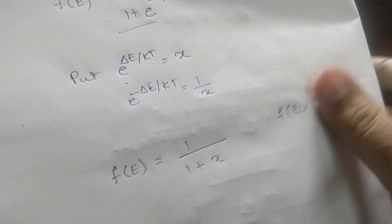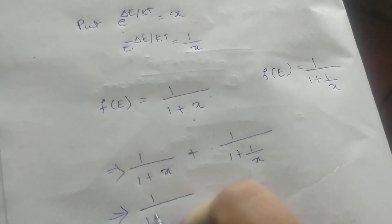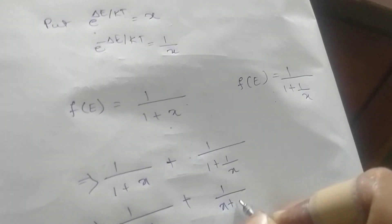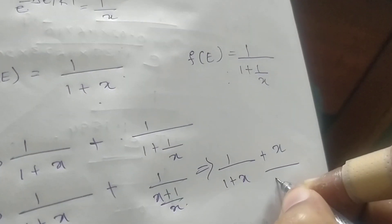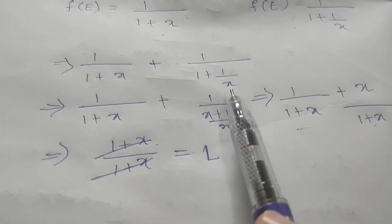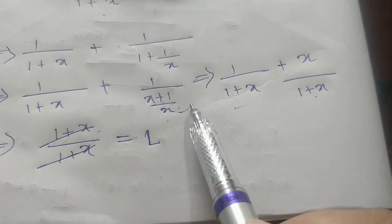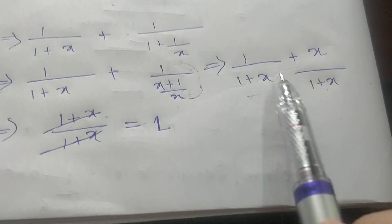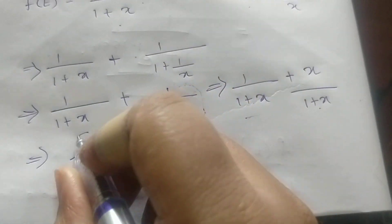Adding the two: 1 over (1 plus x) plus 1 divided by (1 plus 1 over x). The second term simplifies to x over (1 plus x). So we have 1 over (1 plus x) plus x over (1 plus x). Taking LCM, which is (1 plus x), we get (1 plus x) divided by (1 plus x), and both cancel, giving the answer as 1, which is unity.